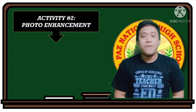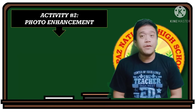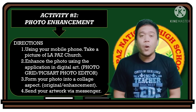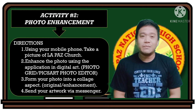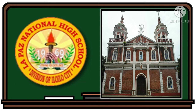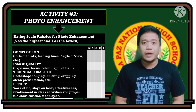Activity number 2: Photo Enhancement. Materials needed: mobile phone or smartphone and a digital art application installed on your mobile phone or smartphone. Directions — Number 1: Using your mobile phone, take a picture of the past church. Number 2: Enhance the photo using a digital art application like Photo Grid or Pixart Photo Editor. Number 3: Form your photo into a collage showing the original and enhancement. Number 4: Send your artwork via Messenger. This is an example of a picture of the past church — you may take a photo at any angle you like. This shows an example of the output with the original photo and enhanced photo side by side.